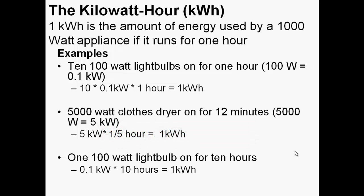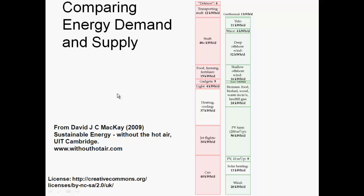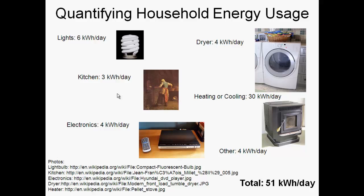Quantifying energy usage is really important for comparing power consumption between countries. This graph shows power consumption in kilowatt hours per day per person versus GDP per capita for various countries, and you can see that countries with a higher GDP also tend to use more power per person per day. It's also useful to compare energy demand and supply — where energy is coming from and where it's being used. For a typical Canadian household, these amounts of energy add up to about 51 kilowatt hours per day of total energy use.